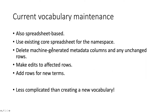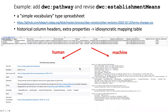You simply take the table, delete any of the machine-generated metadata columns and any rows that you don't want to change. Then all you do is edit the rows for terms that need to be changed and add rows for any new terms. So it's actually quite a bit less complicated than creating a new vocabulary. This process was used for the recent term addition of the Darwin Core pathway term and degree of establishment term, and also the revision of the establishment means terms.